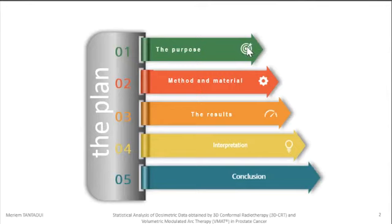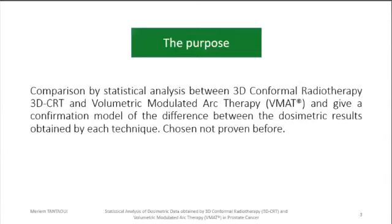I will follow the following plan: the purpose, method and material, the results, interpretation, and conclusion. Radiation therapy is one of the treatments used to treat prostate cancer while relying on the principle of irradiating the tumor by sparing healthy tissue. There are different modalities of radiotherapy used to treat this type of cancer, which leads to identifying the difference between them. The purpose of this study is to compare by statistical analysis between 3D conformal radiotherapy and volumetric modulated arc therapy, and to give a model of confirmation of the difference between the dosimetric results obtained by each technique, the existence of which has not previously been statistically proven.